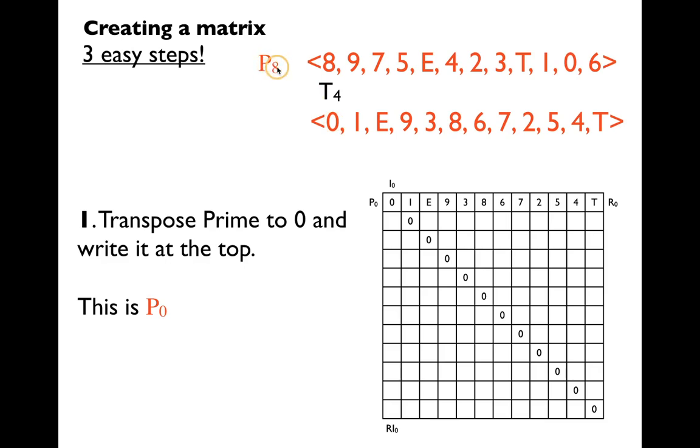For example, if your prime started on six, if your prime form was P6, you would transpose it by six semitones to get to zero. In this case it's P8, so we transpose it up four semitones. Once you've transposed it to zero, you write it at the top of your matrix. This represents P0. Note too that we've filled in this diagonal of zeros from top left to bottom right. Our matrix will eventually show all orderings of prime, all orderings of retrograde, all orderings of inversion, and all orderings of retrograde inversion.